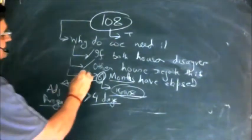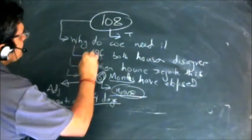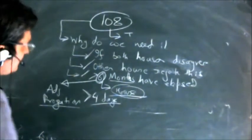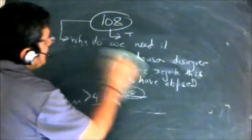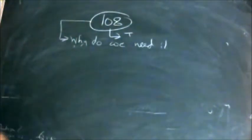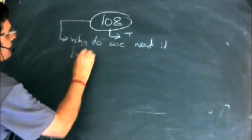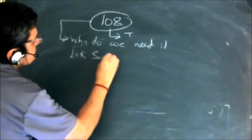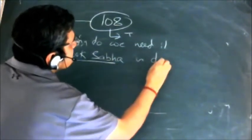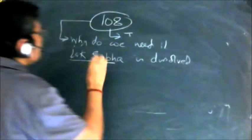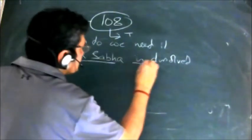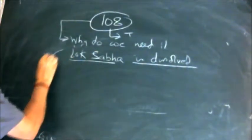So these are the three situations where the need for Article 108 would arise. And if there is a disagreement and meanwhile the Lok Sabha is dissolved, then the bill will lapse. But if Lok Sabha is not dissolved, Lok Sabha is there and there is a disagreement, then the president has a role here.